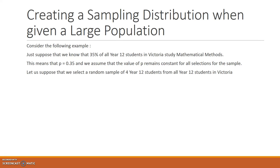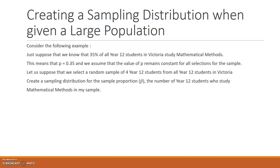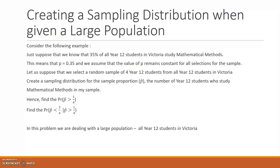Let us suppose that we select a random sample of four Year 12 students from all Year 12 students in Victoria. We're going to create a sampling distribution for the sample proportion P-hat, which is the number of Year 12 students who study Maths Methods in the sample. We'll find P(P-hat > 1/4), then find P(P-hat < 3/4 | P-hat > 1/4).